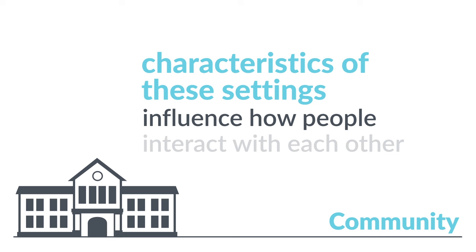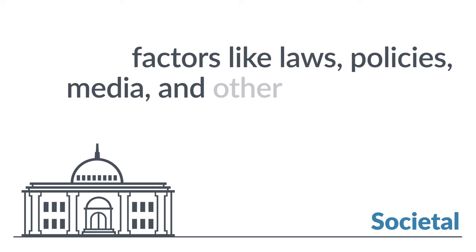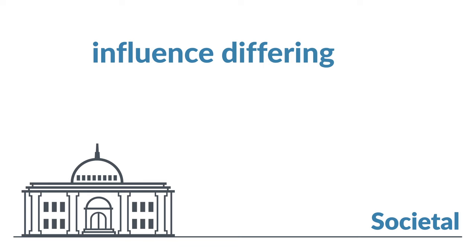The societal level includes factors like laws, policies, media, and other social forces that influence shared values and social norms, such as the acceptance or rejection of violence. These societal level factors also influence differing levels of access and opportunities available to groups of people within a society.